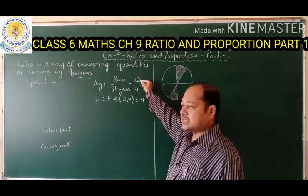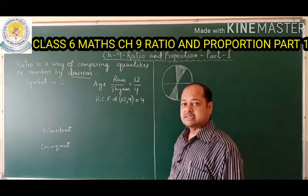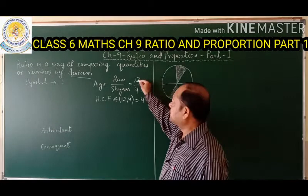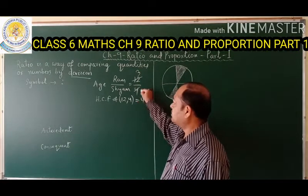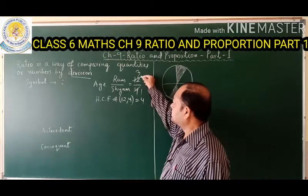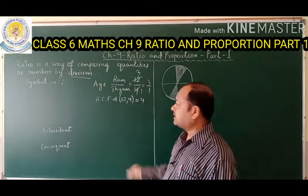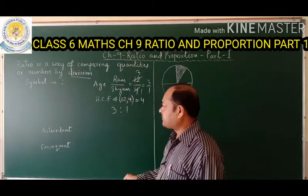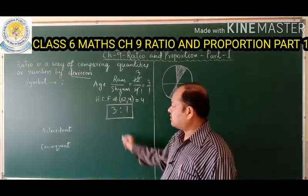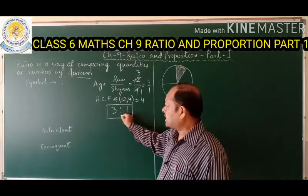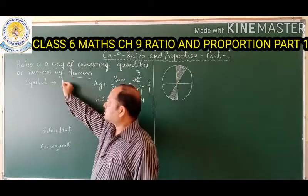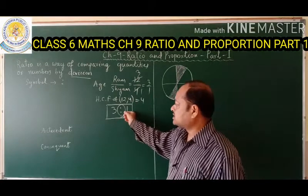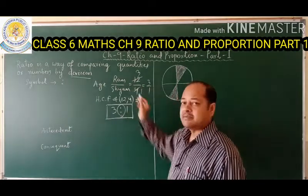By dividing both 12 and 4 by the HCF of 4, we get the simplest form. 12 divided by 4 gives 3, and 4 divided by 4 gives 1. So we get 3 by 1. In ratio form we write this as 3 is to 1, using the colon symbol, which is the symbol of ratio. So 3 is to 1 represents the ratio of the ages of Ram and Shyam.